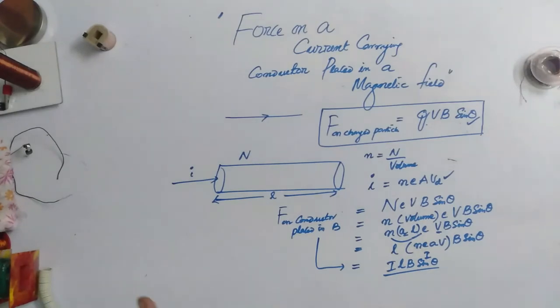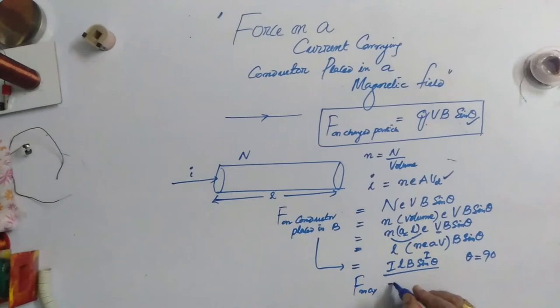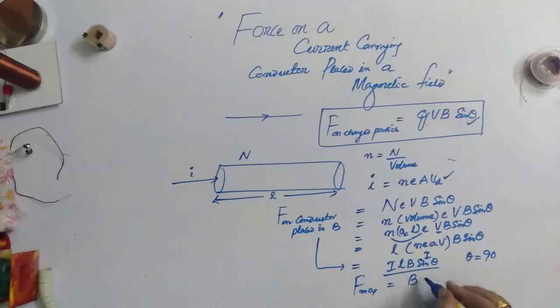Suppose if the force on conductor would be maximum when the conductor is placed right angles to the magnetic field. In that case, the F max will be B, I, and length of the conductor. So here this tells us if more is the magnetic field, more is the current, more is the length of the conductor, the force experienced by it is also more.